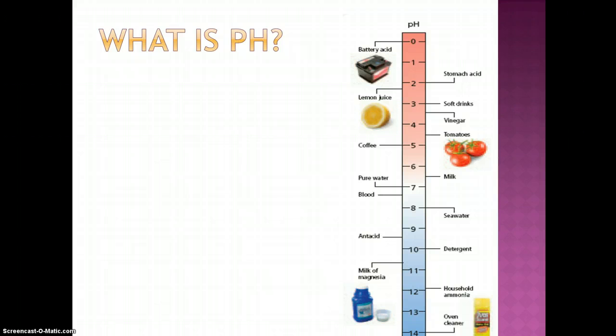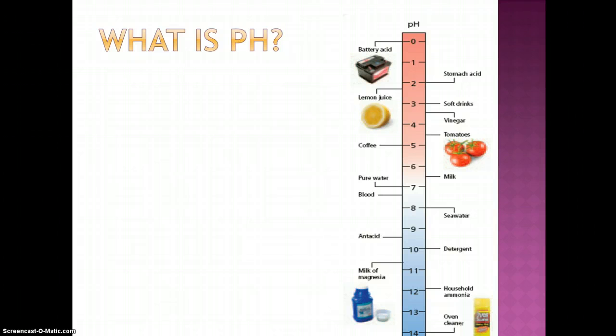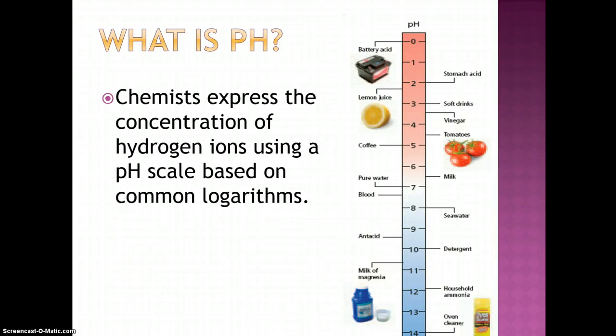Since the concentration of hydrogen ions are often very small numbers expressed in scientific notation, chemists needed an easier way to express this information. They express concentration of hydrogen ions using the pH scale which is based on common logarithms.